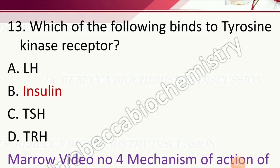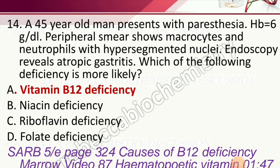Question 13: Which of the following binds to a tyrosine kinase receptor? Options are LH, insulin, TSH, and TRH. The correct answer is insulin.